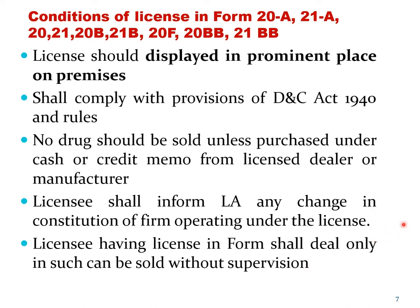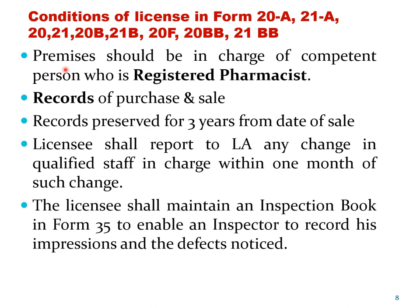If the licensee wants to sell narcotics and psychotropic drugs, he should have the appropriate license; he cannot sell them under a Form 20A license. The premises from where sale is carried out should be in charge of a competent person who is a registered pharmacist. This is the importance of registration once you have completed your B.Pharm. The license is given only on the assurance of the presence of a registered pharmacist in the premises. Records of sale and purchase should be maintained and preserved for 3 years from the date of sale.